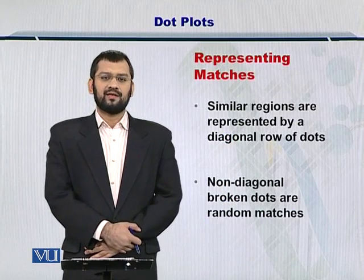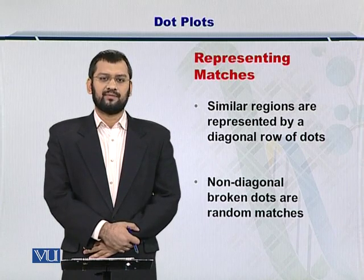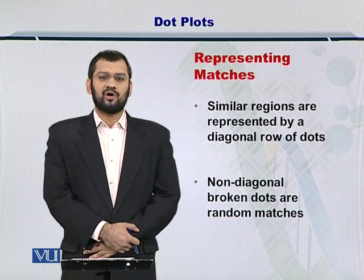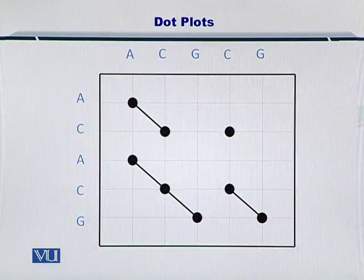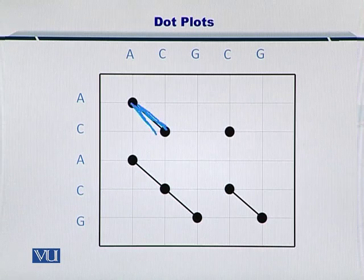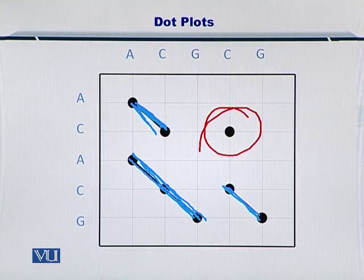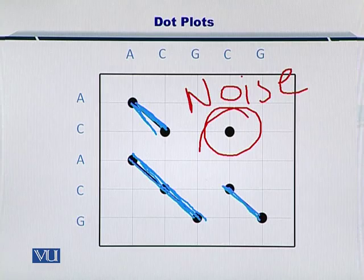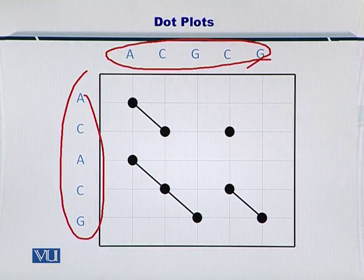As the next step, we will be connecting these dots on the matrix such that adjacent nucleotides will be connected to each other. There may be a situation where some dots will not get connected to any other dot — in that case, they are simple noise or random matches. As you can see, these two dots could be connected as they are adjacent. These three dots could be connected diagonally. These two dots are also connected diagonally. However, there is one dot that could not be connected, and therefore this is just random noise. These diagonals represent the portions within the two sequences that are very similar to each other.